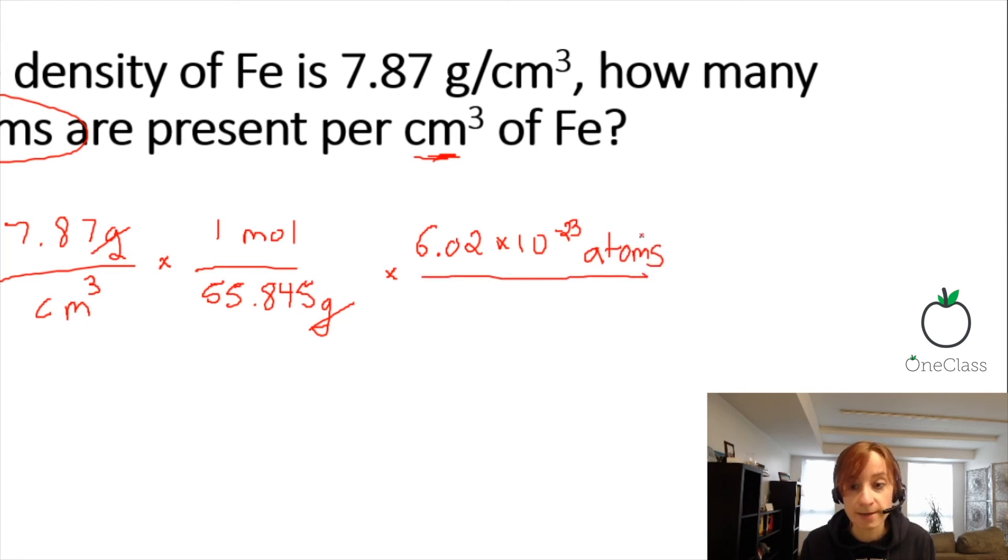In this case, we want atoms. But it could be molecules, it could be ions, anything like that. And it's always per mole. Now moles cancel out. Our units would give us atoms per centimeter cubed, which is what the question asked.